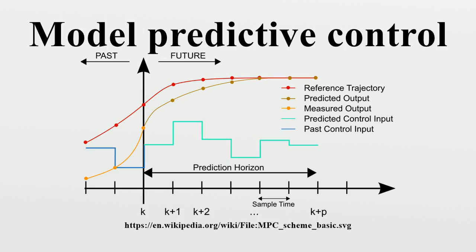These changes are calculated to hold the dependent variables close to target while honoring constraints on both independent and dependent variables. The MPC typically sends out only the first change in each independent variable to be implemented, and repeats the calculation when the next change is required.